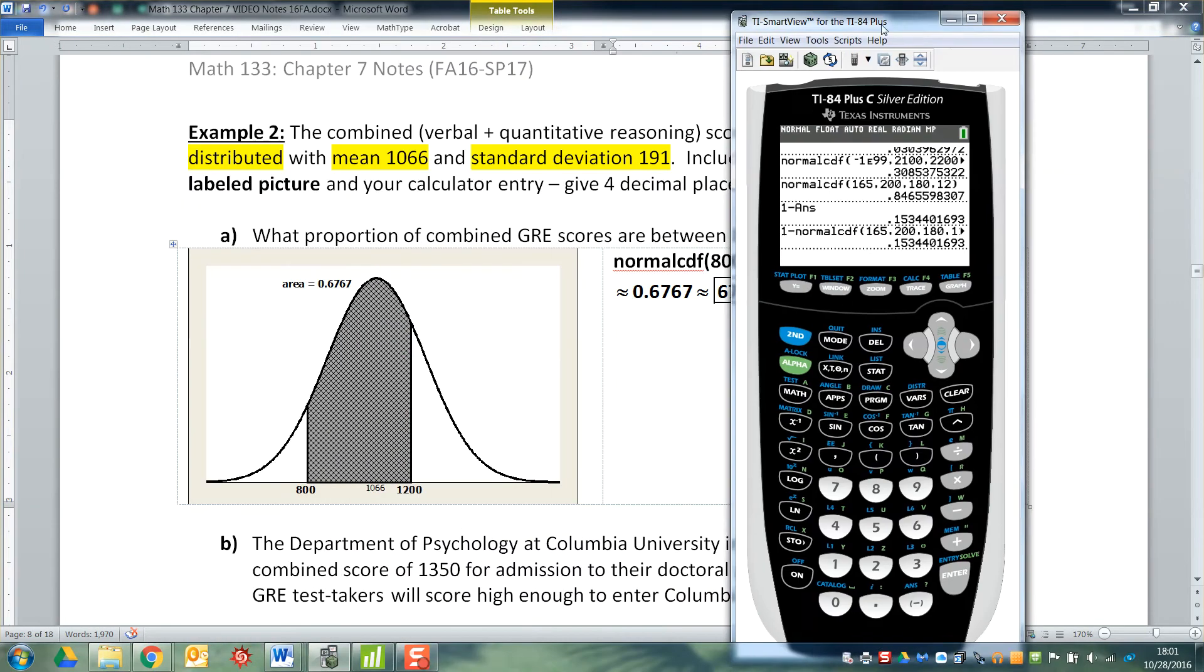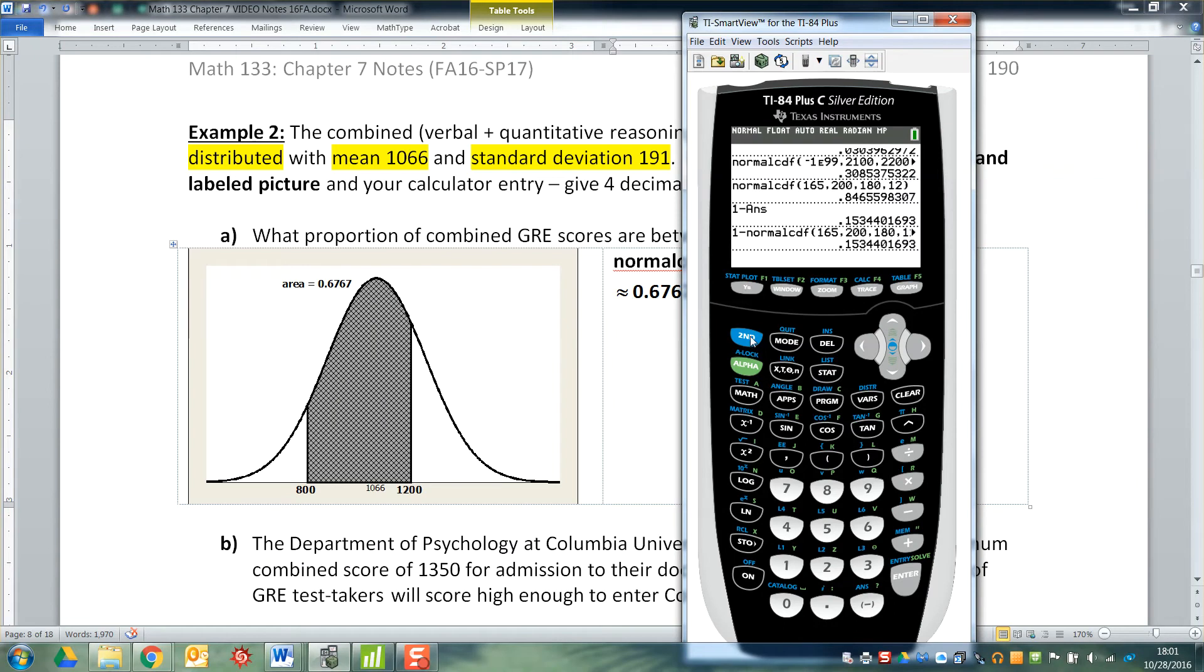So I know I'm doing normal CDF. Well normal CDF is from left to right, so I'm going to go to the second distribution, normal CDF, the left-hand bound is 800, the right-hand bound is 1200, the mean was 1066, and the standard deviation was 191.